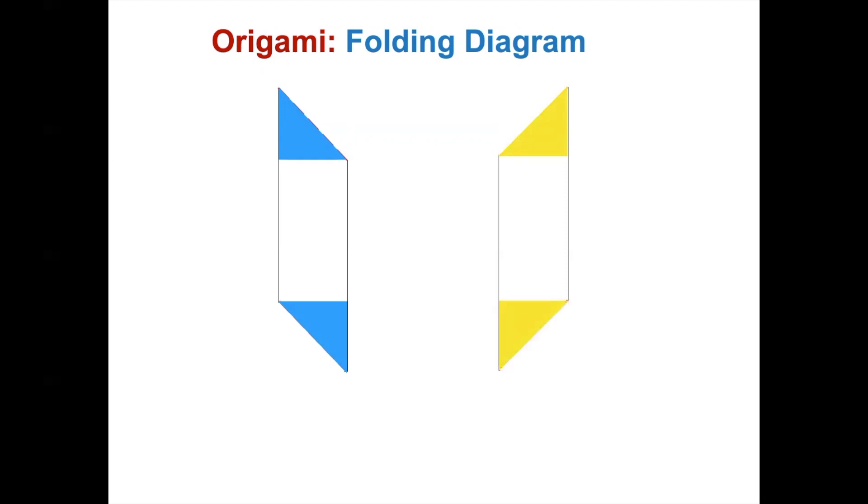They are different, but they are mirror images, symmetric above this line. Let's continue with the first module. Valley fold to the right. Valley fold to the left.